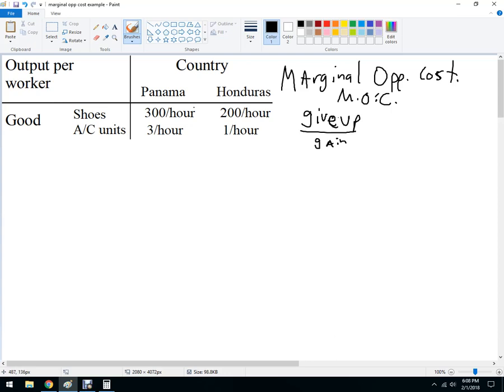So in this case I've got two countries, Panama and Honduras in this model. And they can make shoes or AC units. So a worker in Panama can produce 300 shoes per hour or 3 AC units. A worker in Honduras can produce 200 shoes per hour or 1 AC unit per hour.